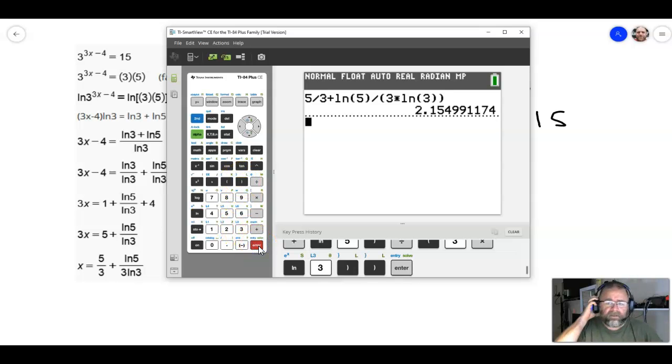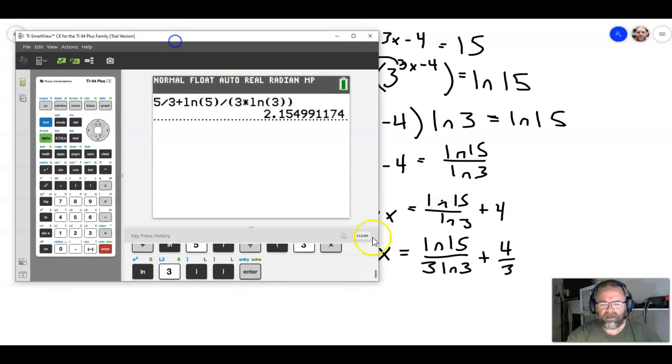And that decimal approximation is about 2.155, if you round to 3 decimal places. The next thing I want to do is I want to put in this side to make sure that that's the same thing.